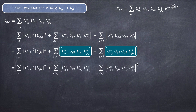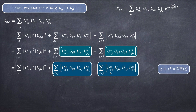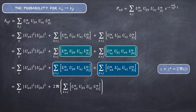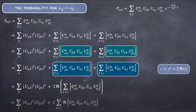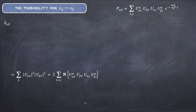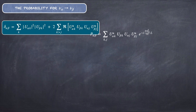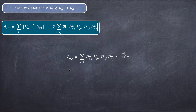We recognize that the K > J and K < J terms are complex conjugates of each other. Summing a complex number Z and its complex conjugate gives 2 Re(Z). So δ_αβ equals the J = K term plus 2 Re of the summation over K > J. The real part of a sum equals the sum of the real parts — a useful relation we'll now apply to the probability.